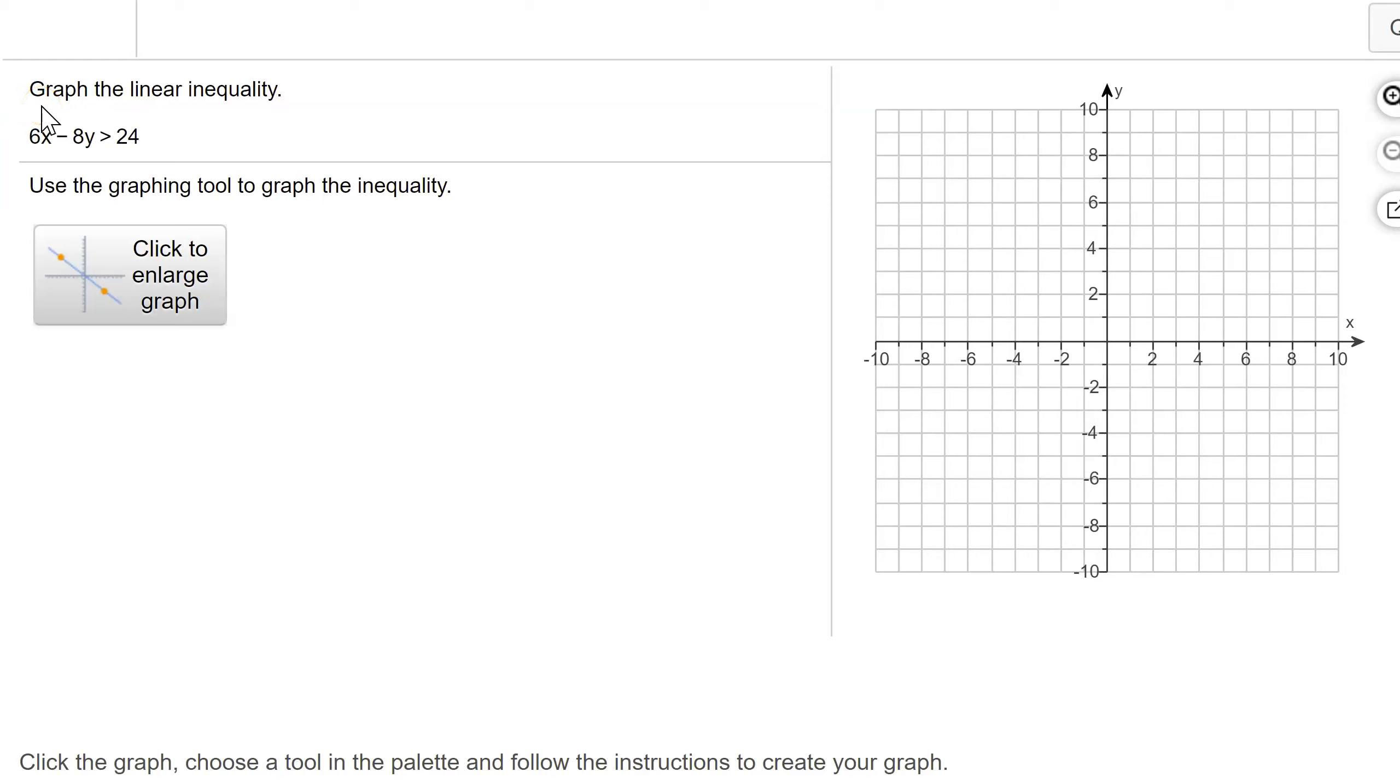Here is a problem from MathLab in which we need to graph the linear inequality 6x minus 8y is greater than 24. I'm going to do this problem using intercepts and the test point method.